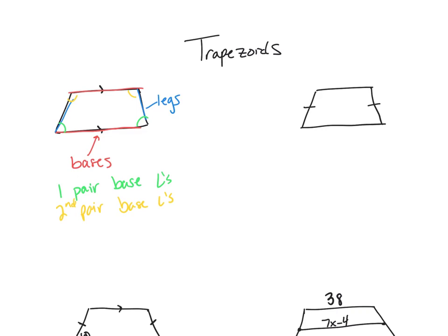I also have isosceles trapezoids. So these are trapezoids. They still have the parallel bases. But what happens is the legs are congruent, which then sets up a couple different things.